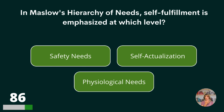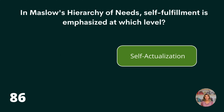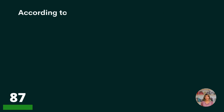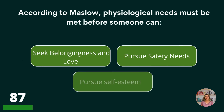In Maslow's hierarchy of needs, self-fulfillment is emphasized at which level? Safety needs, self-actualization, or physiological needs? Self-actualization.